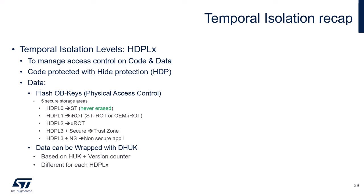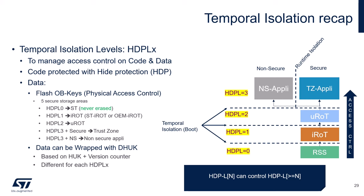To recap: temporal isolation allows access control to code and data. Code is protected through the hide protection, and data is stored within the OB keys secure storage areas and can be wrapped with a derived HUK, which is different for each HDP level and is based on the HUK and the rollback monotonic counter called EPOCH. Typical HDP level assignment is: level 0 to root security services, level 1 to STI-ROT or OEMI-ROT, level 2 to the U-ROT, and level 3 split into secure and non-secure for the application.